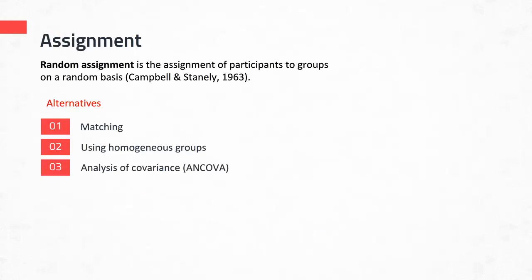Finally, in a participant section, you need to talk about random assignment or group equivalence if you're going to do a group comparison study or implement some type of intervention. Random assignment is the assignment of participants to a group on a random basis — you have a list of participants and randomly assign them to either the treatment or control group, giving every individual equal opportunity to be part of either group. This ensures that participants in different groups are reasonably comparable, eliminates the possibility of systematic differences, and allows you to attribute results to the treatment or intervention.